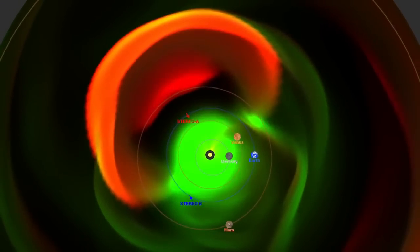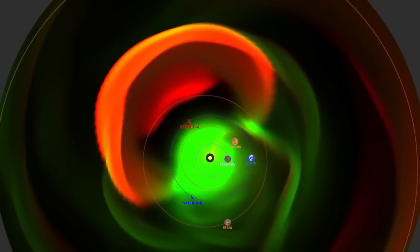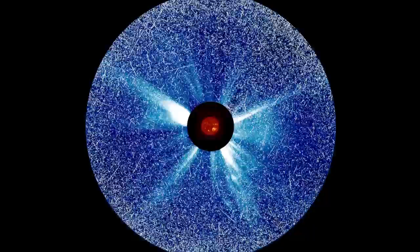NASA's fleet of heliophysics spacecraft watching the Sun from all sides improves our understanding and enables predictions of these solar outbursts.